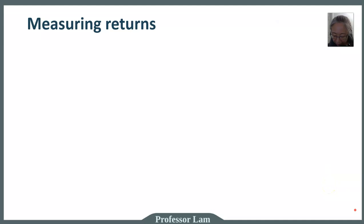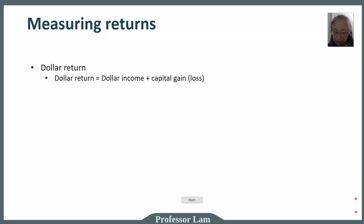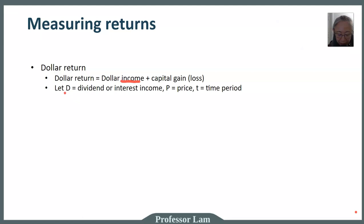How do we measure return? First, we can measure return in terms of dollars. The dollar return is simply your dollar income plus your capital gain or capital loss. We're going to use some symbols here — if you're not comfortable with symbols, just replace them with words. We'll use D to stand for dividend or interest income, so D is the income component, and P stands for price. We'll use t to denote the time period.